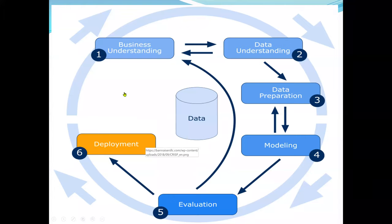Graphically, these are the six steps. First is business understanding — I will also use the term the business objective and what type of business we have. It can be in retail, engineering, or medicine. The business objective we need to understand. Second step will be our data.